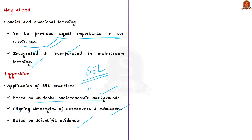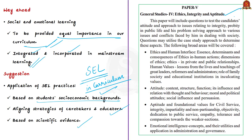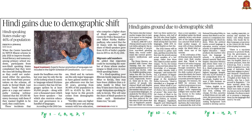This discussion focused on an important development needed in the education sector. The topic is also important for the ethics paper, as the role of family, society, and educational institutions in inculcating values is an important part of the syllabus, along with emotional intelligence.